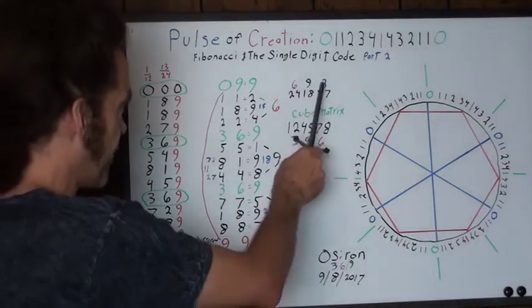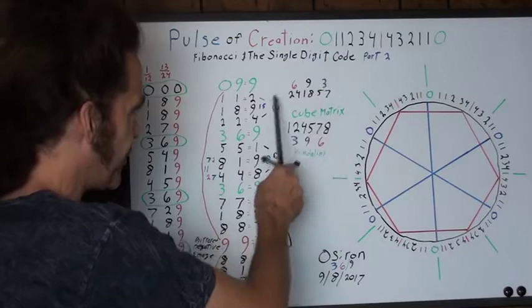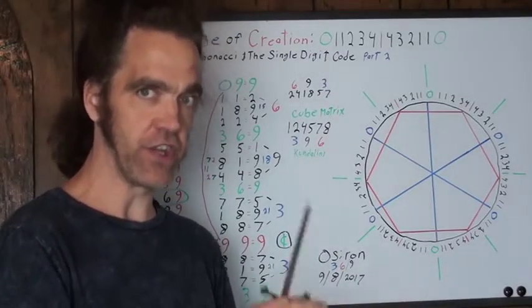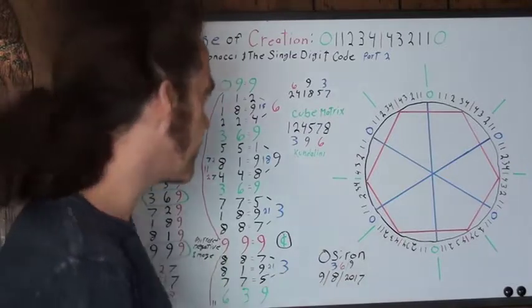And that reveals six, nine, three, and the other way it's three, nine, six. So it keeps going back and forth, oscillating from three, six, nine, to six, nine, three, to infinity, flipping back and forth.